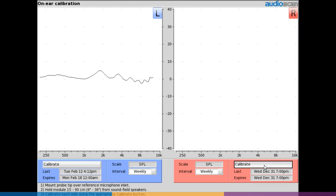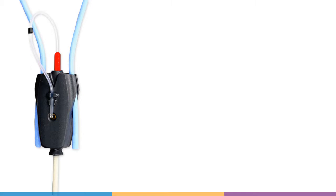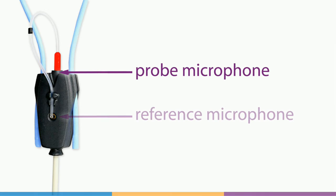The probe microphone coupled with the silicone probe tube does not have a flat frequency response. The user calibration process compares this response with the flat factory-calibrated response of the reference microphone and compensates all subsequent probe tube measurements for this difference.